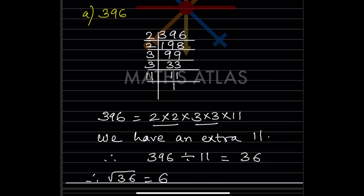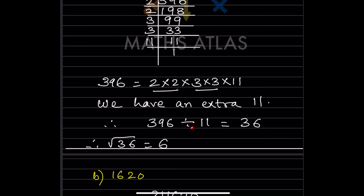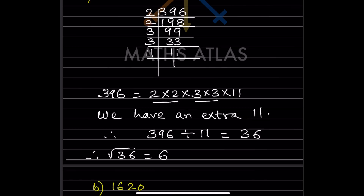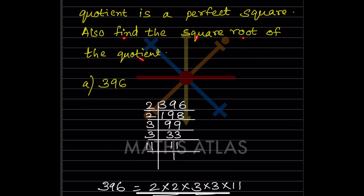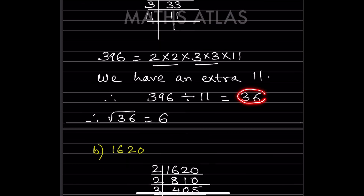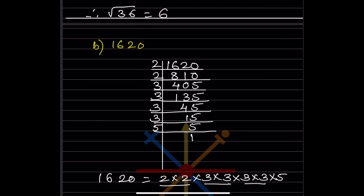Since 11 is extra and they said 'what should be divided,' we divide 396 by 11, which gives 36. They also said to find the square root of the quotient. So the square root of 36 is 6, because 6 × 6 = 36. The answer is 6.